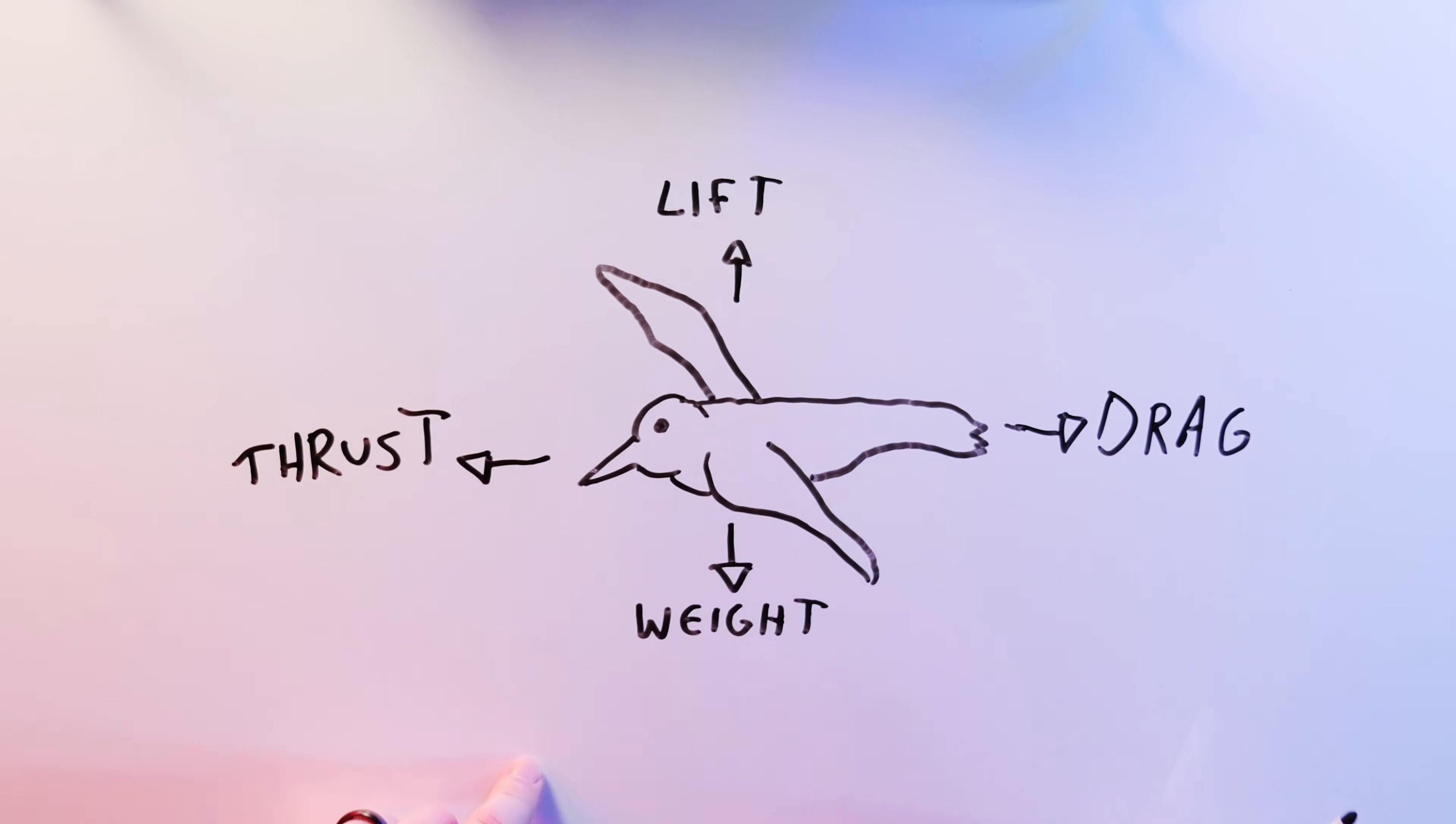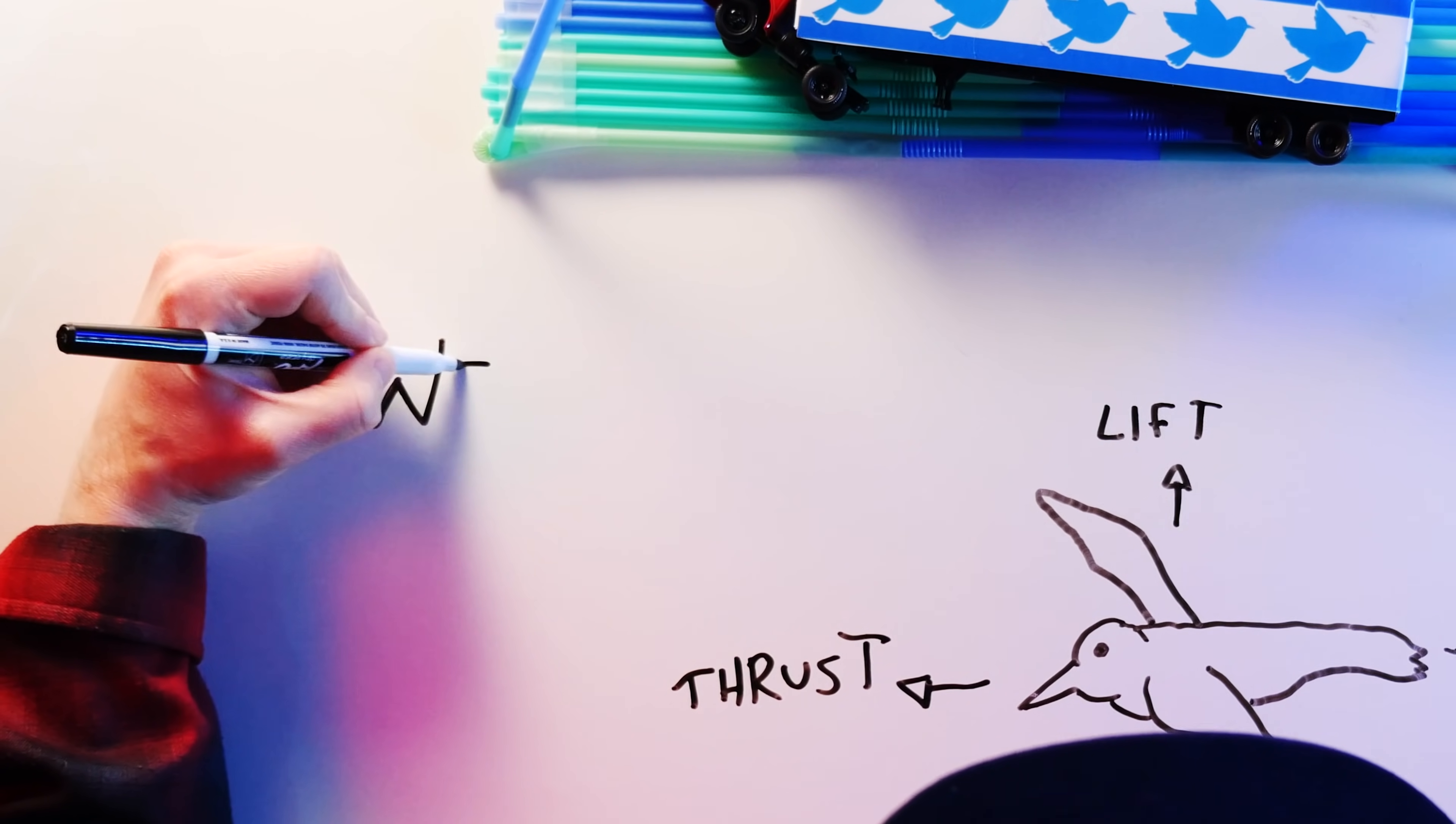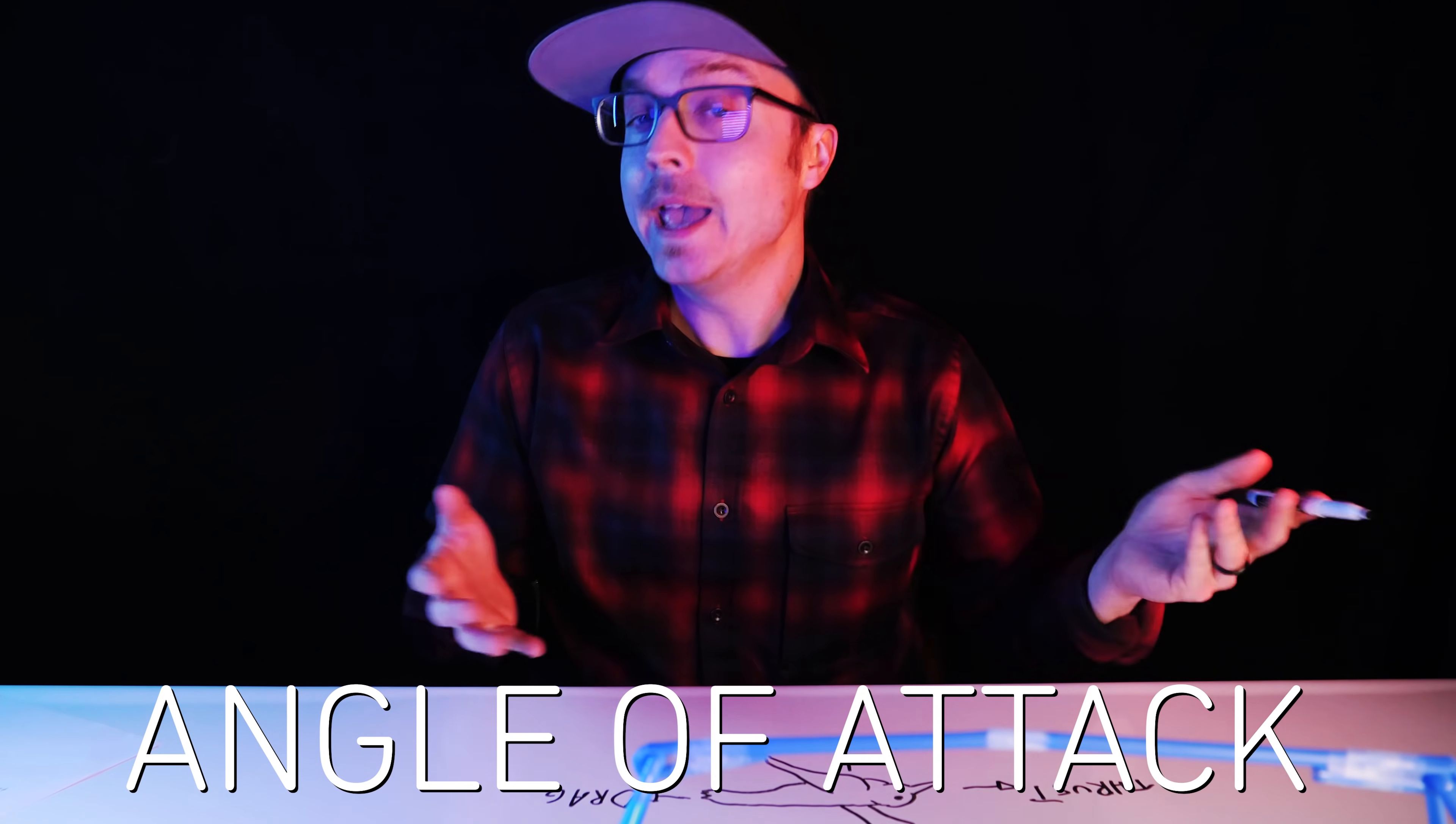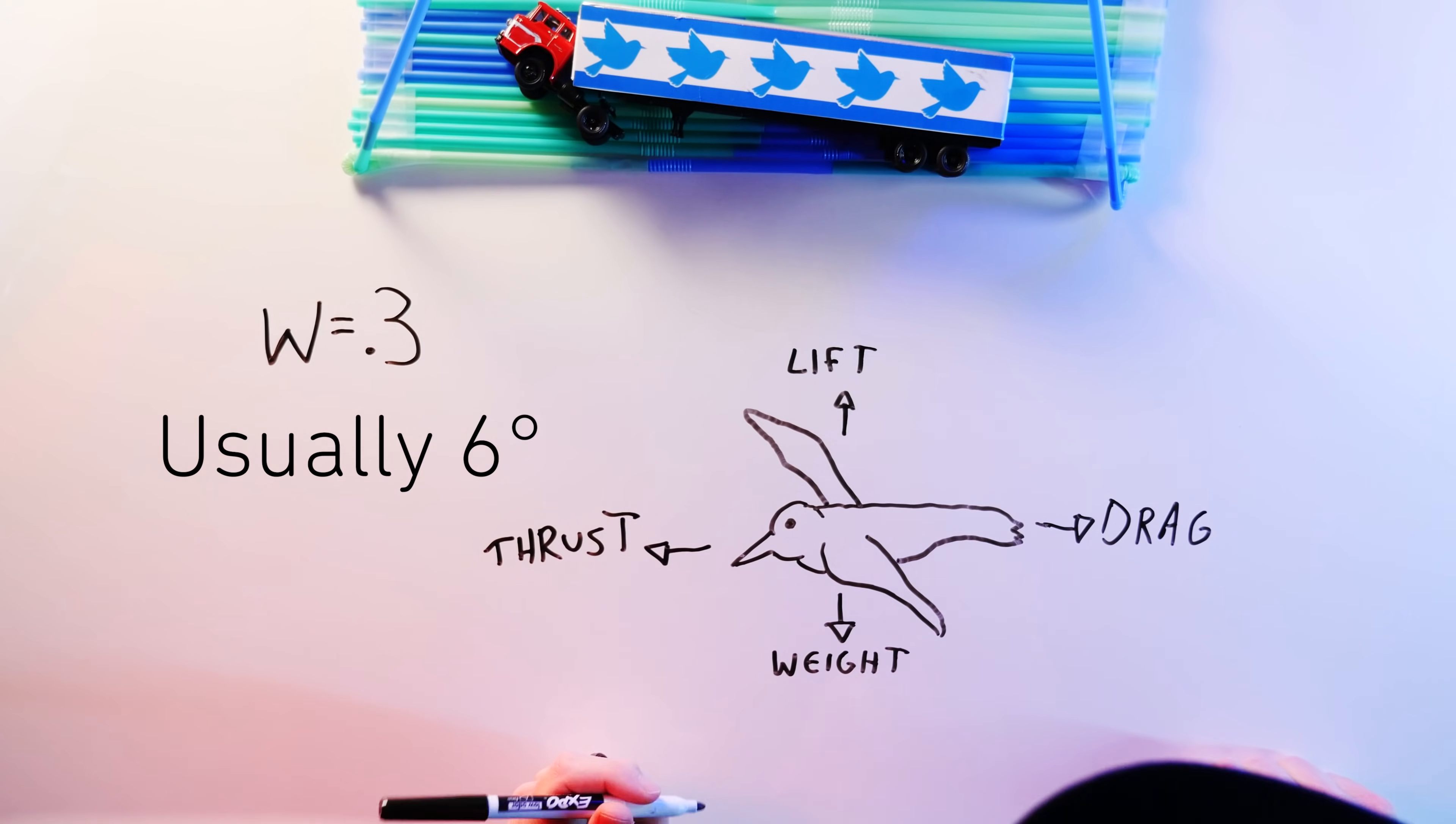To fly, a bird has to generate enough lift and thrust to counteract drag and its body weight. We can calculate that by making weight W, which equals 0.3, a constant value related to the angle of attack, which is the angle of its wings relative to the air, usually 6 degrees or so,